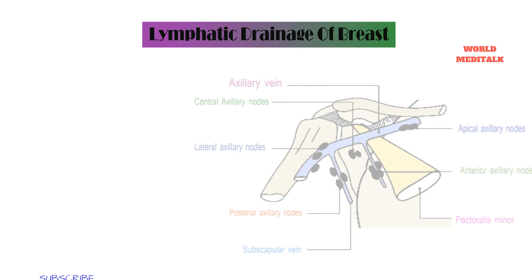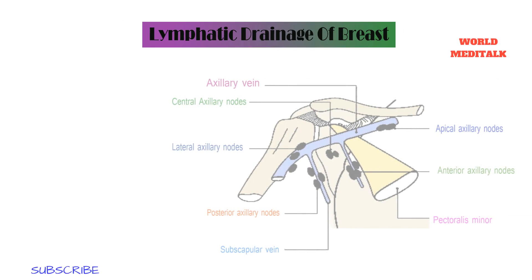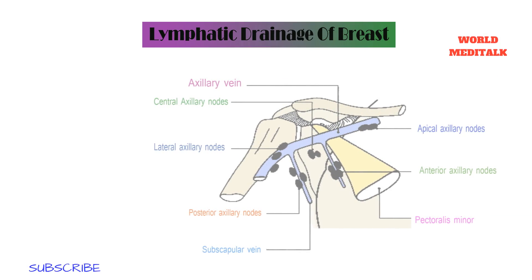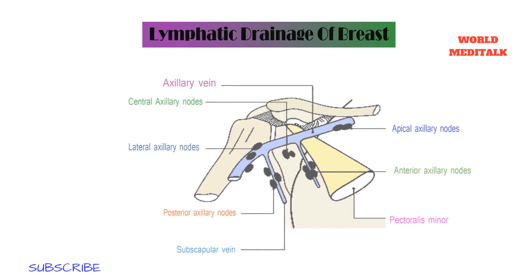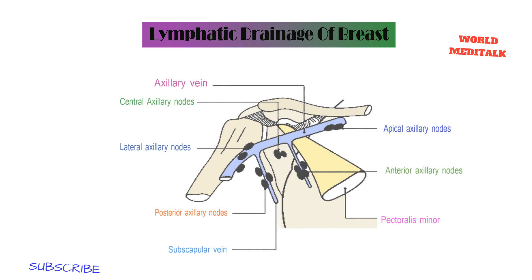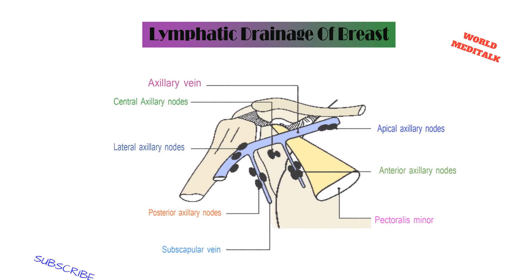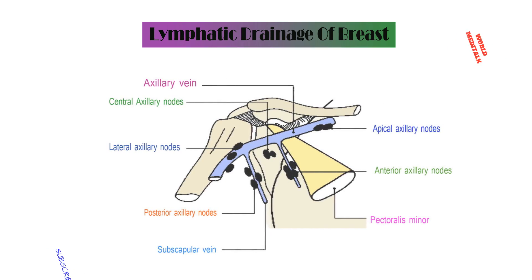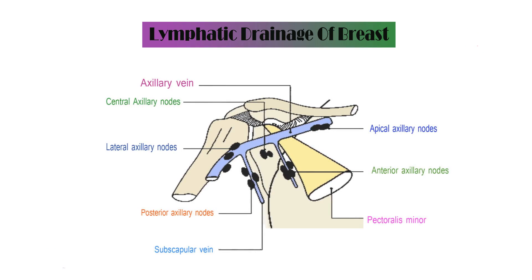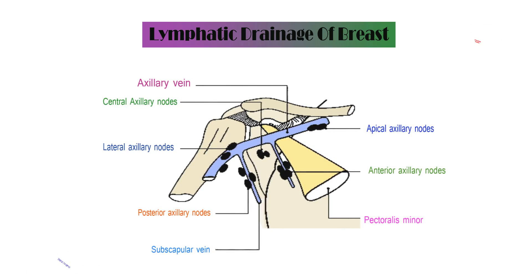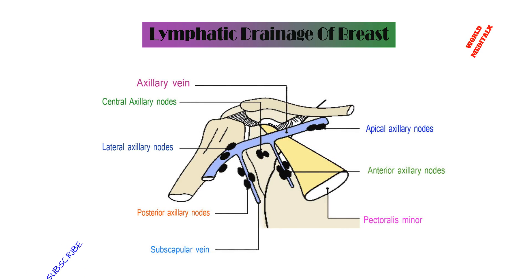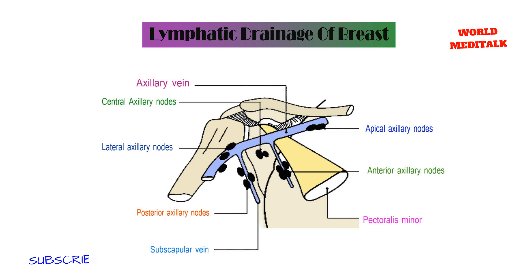In summary, the axillary lymph nodes are arranged in five sets with a total of around 20 to 30 nodes. The anterior group lies at the lower border of the pectoralis minor muscle, close to the lateral thoracic vessels. The posterior group lies along the subscapular vessels. The lateral group lies posterior and medial to the axillary vein. The central group lies beneath the pectoralis minor within the fat of the axilla. The apical group lies behind and above the pectoralis minor, medial to the axillary vein.